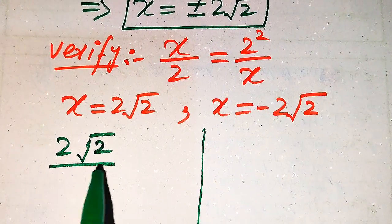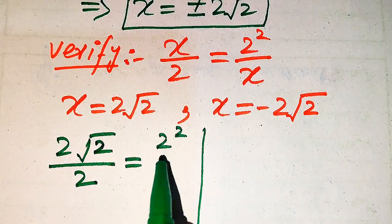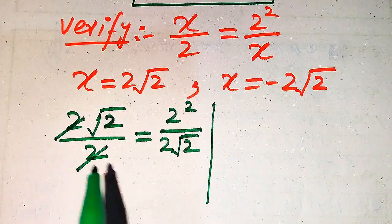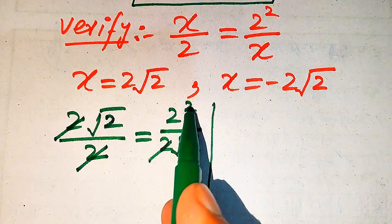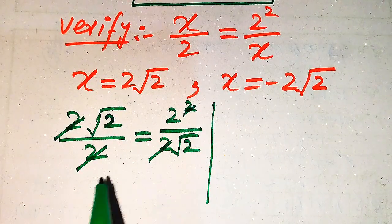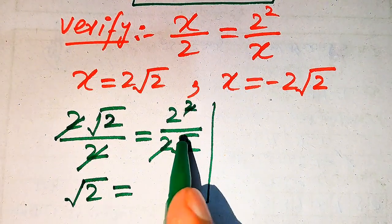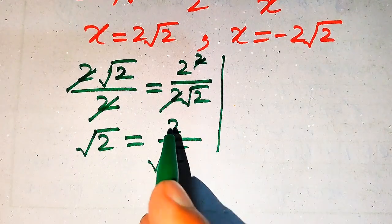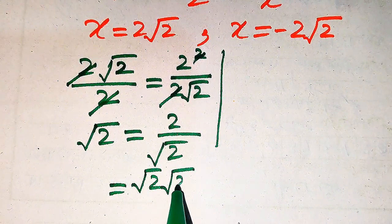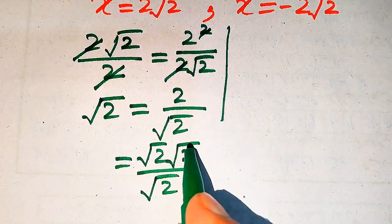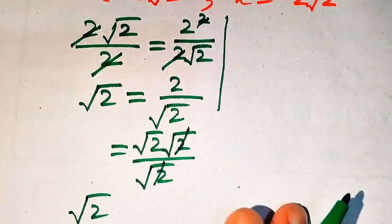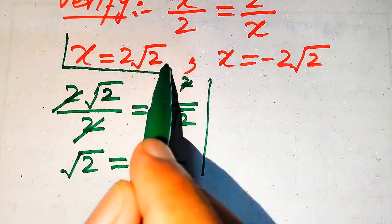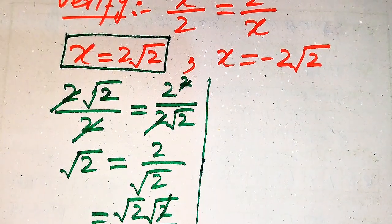Substituting x equals 2 root 2 into the left hand side gives 2 root 2 divided by 2, and the right hand side becomes 2 squared divided by 2 root 2. The 2s cancel on the left giving root 2, and on the right one factor of 2 cancels giving 2 over root 2. Writing 2 as root 2 times root 2, then cancelling root 2, gives root 2. So we get root 2 equals root 2, confirming the first value of x is a valid solution.